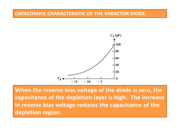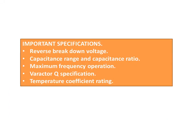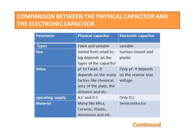Capacitance Characteristics of the Varactor Diode: When the reverse bias voltage of the diode is zero, the capacitance of the depletion layer is high. An increase in reverse bias voltage reduces the capacitance of the depletion region. Important specifications include: reverse breakdown voltage, capacitance range and capacitance ratio, maximum frequency of operation, Varactor Q specification, and temperature coefficient rating.